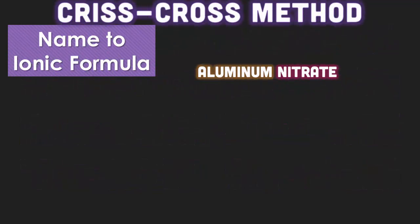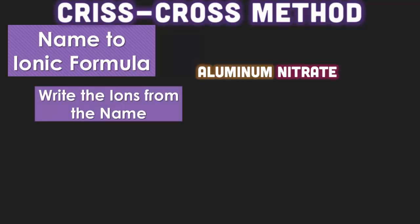So crisscross method, you're going to take the name of the ionic compounds, aluminum nitrate, write down the ions that are in aluminum nitrate. You're noticing aluminum is going to be your cation, and the nitrate is your anion.